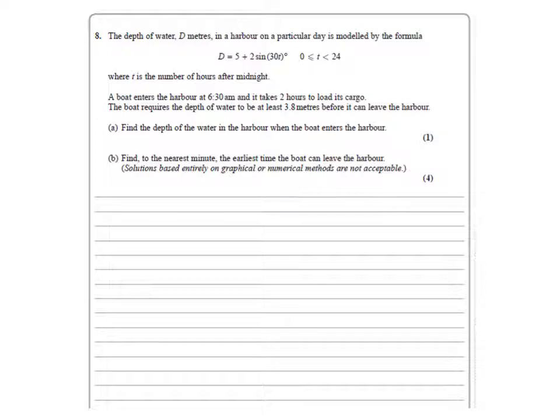Part A: Find the depth of the water in the harbour when the boat enters the harbour. So the boat enters the harbour at 6.30am, which is 6.5 hours after midnight. So we put 6.5 into our formula. Working this through gives us an answer of 4.48 metres.